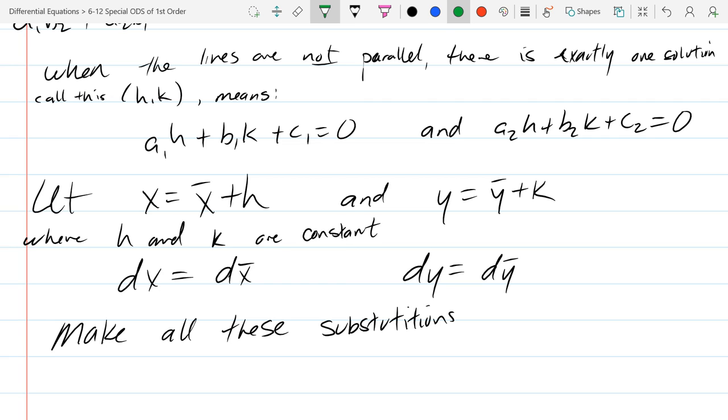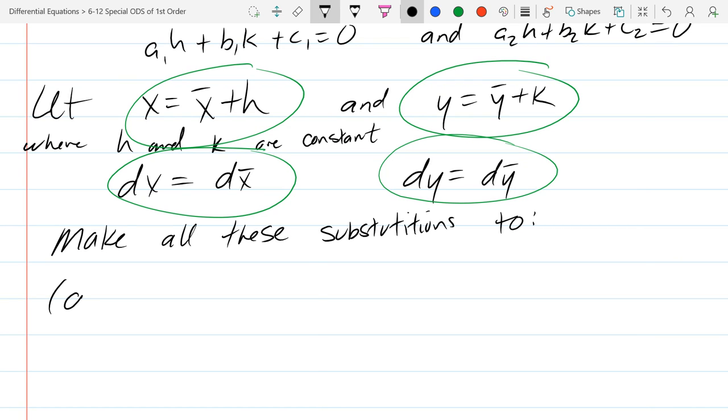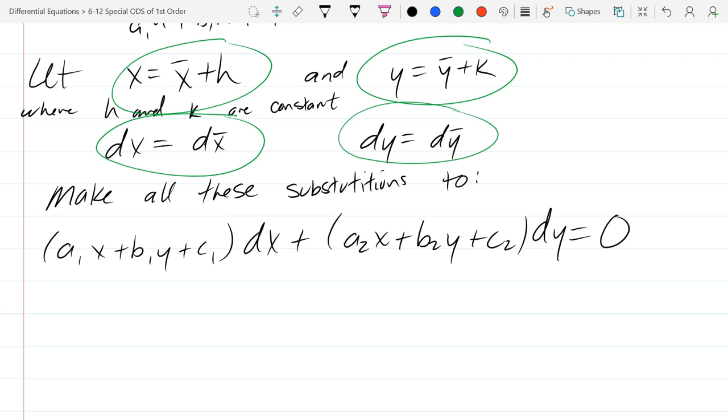So good news is, these derivatives are super easy. What is dx? dx bar. dx bar plus 0. How do you write that? The variable is x bar, so it's just d in front of the variable x bar. And same thing, dy is dy bar. So at least that part of the substitution is going to be very simple. We're going to make all these substitutions. I will circle all the substitutions. We have this dx, dy, that, and that. There's basically four substitutions. x and y are coming out, and dx and dy are coming out.